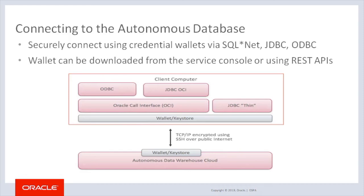Wallet location can be included in the JDBC URL. This requires Oracle JDBC Thin Driver 18.1 or higher. Java properties can also be set prior to starting the application — this requires Oracle JDBC Thin Driver 12.2.0.1 or higher. If you connect to the Autonomous Database through an HTTP proxy, you need to add the HTTPS_PROXY and HTTPS_PROXY_PORT parameters in the address section of connection definitions.